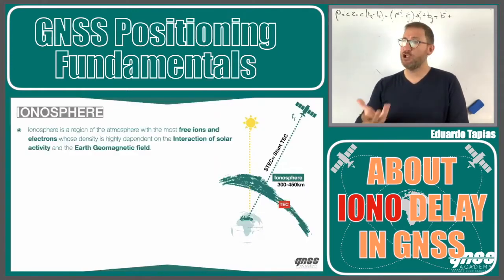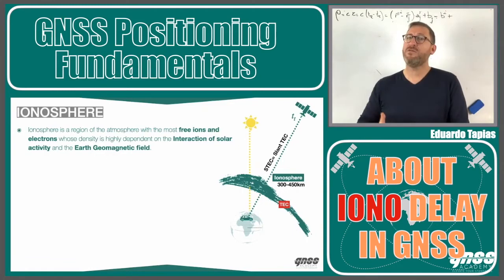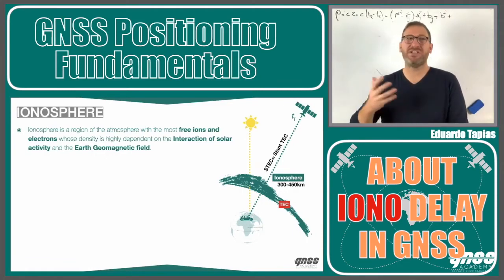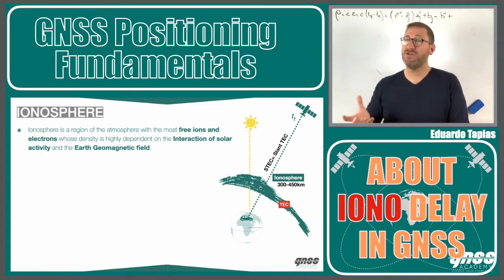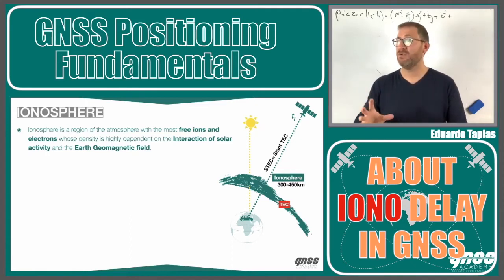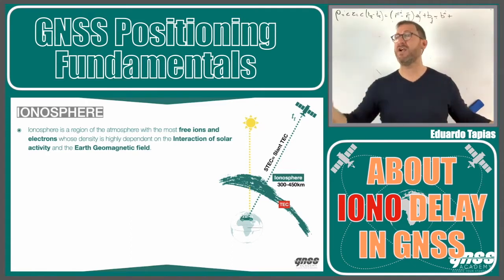The ionosphere is a region in the atmosphere full of what we call electrons — an ionization level. This ionization level in this region depends on the interaction between solar activity and also the Earth's geomagnetic field.